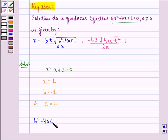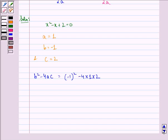We simply put the values of a, b and c in this and we get minus 1 the whole square minus 4 into 1 into 2. This is equal to minus 7.